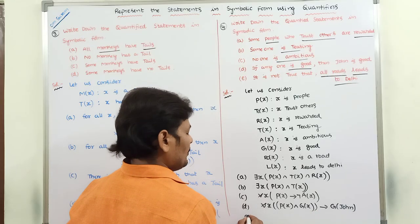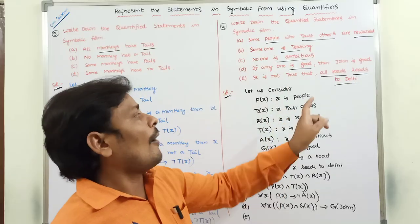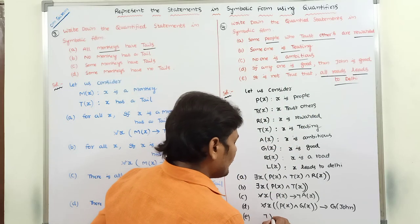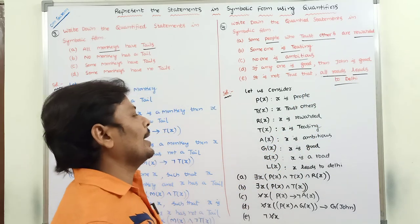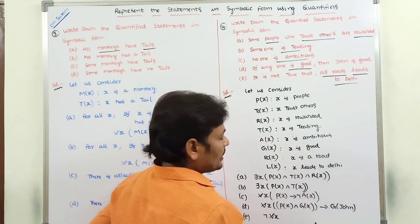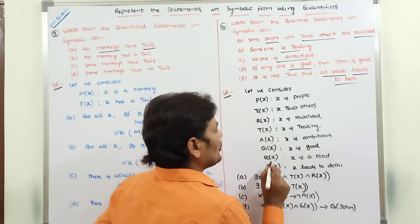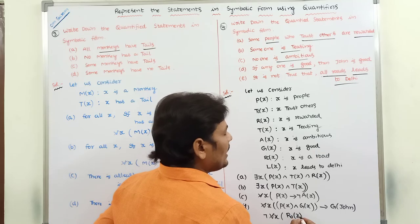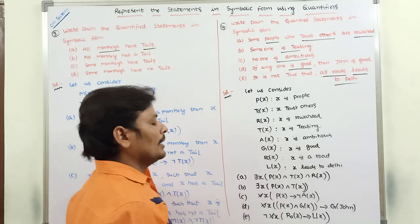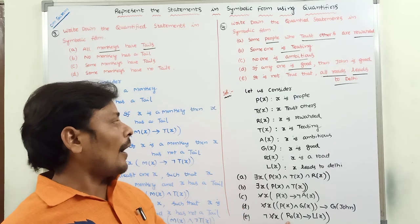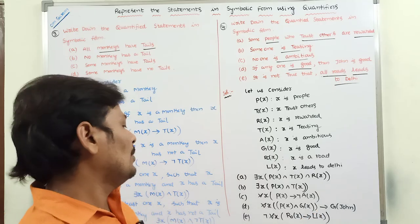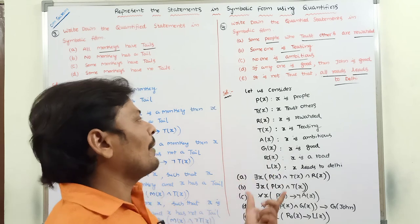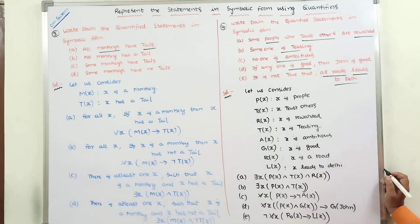Fifth statement: 'It is not true that all roads lead to Delhi.' This can be written as: negation of — for all X, if X is a road, then X leads to Delhi. In symbolic form: negation for all X, RO(X) implies L(X). This is the symbolic form of the fifth statement. In this way, we represent the quantified statements in symbolic form.